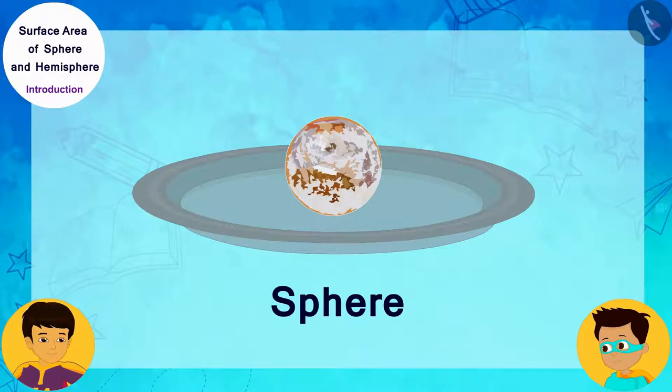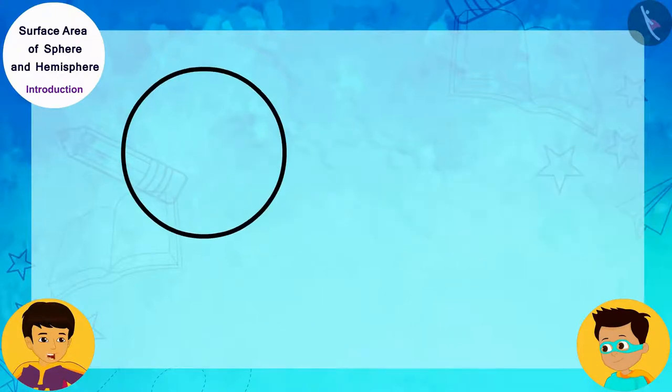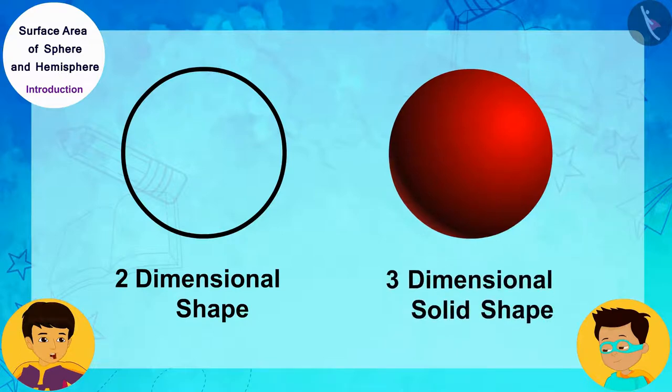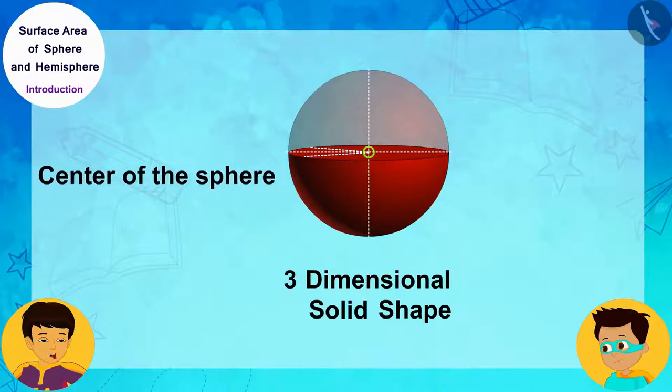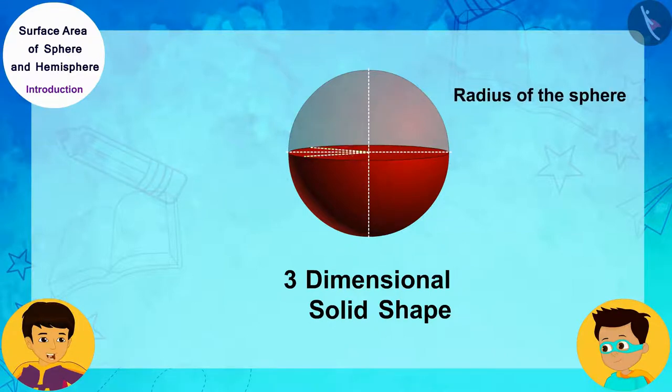Thomas, just like a circle is a two-dimensional shape, a sphere is a three-dimensional solid shape, which is made up of all those points in space which are at a certain fixed distance from a certain fixed point. This fixed point is called the center of the sphere, and the fixed distance is called the radius of the sphere.